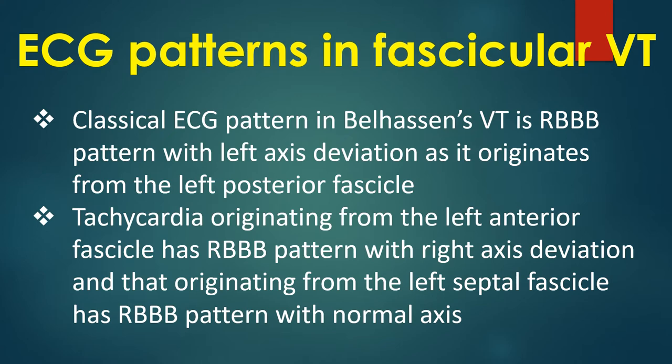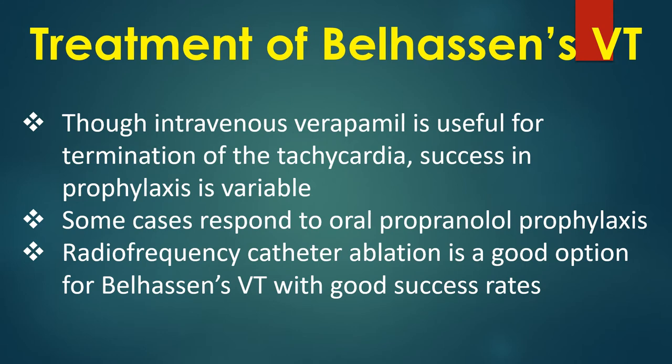Tachycardia originating from the left anterior fascicle has RBBB pattern with right axis deviation. That originating from the left septal fascicle has RBBB pattern with normal axis.